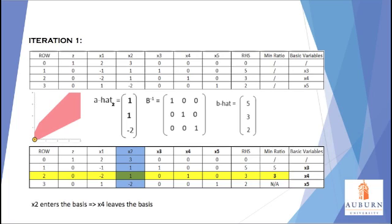To check for optimality, we look at row 0. If there is a positive coefficient in one of the non-basic variable columns, then we can see that the solution is not optimal. Conversely, if we were solving a maximization problem, we would check to see if row 0 had any negative coefficient values. Since X2 has the highest coefficient value, we select that variable to be entered into the basis.